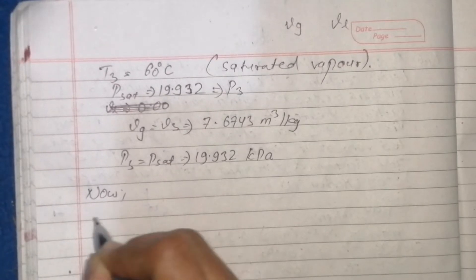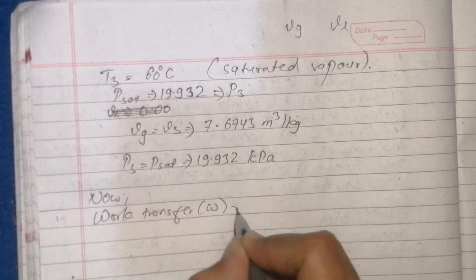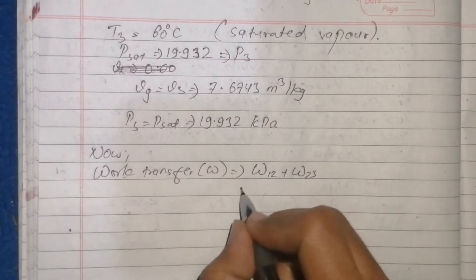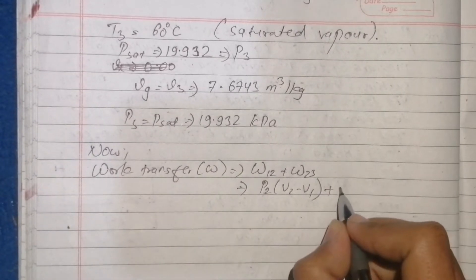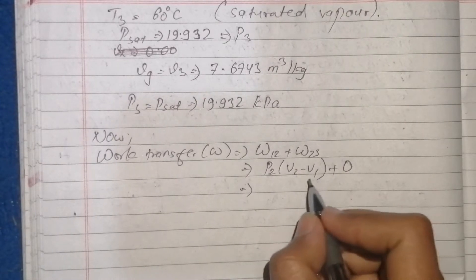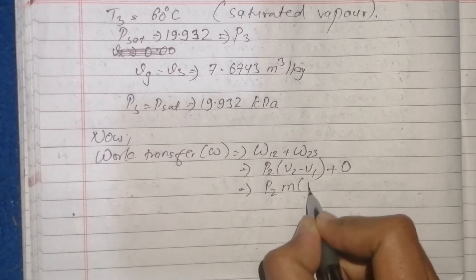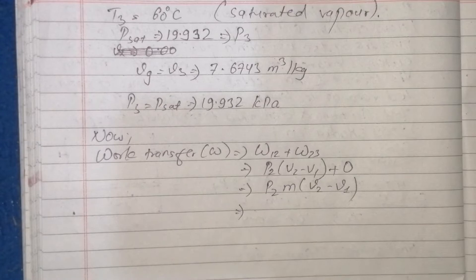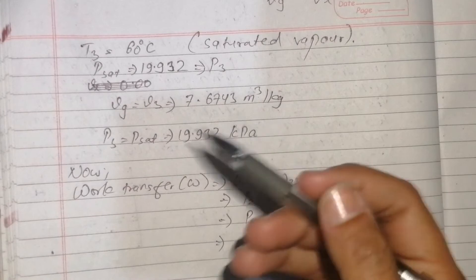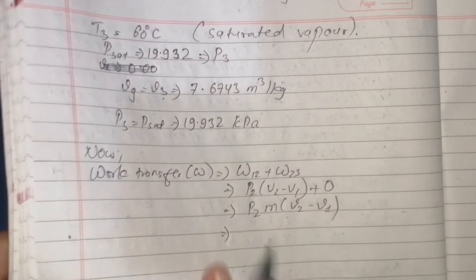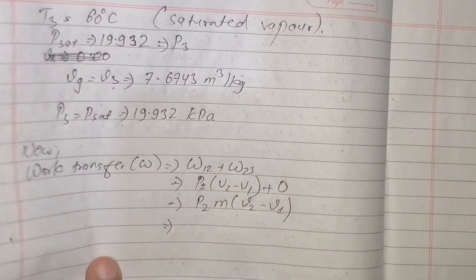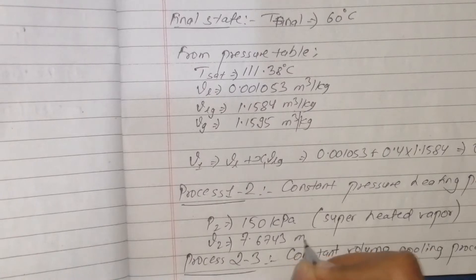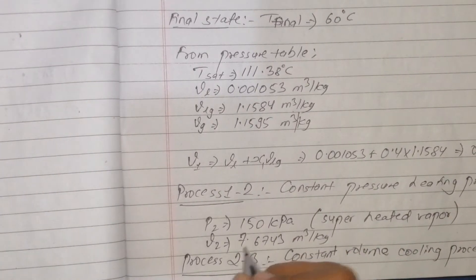Total work transfer W = W12 + W23. For process 1-2, constant pressure: W12 = P * m * (v2 - v1). v2 = vg at state 2 = 7.6743 m³/kg and v1 = 0.46441 m³/kg. For process 2-3, constant volume, so W23 = 0.